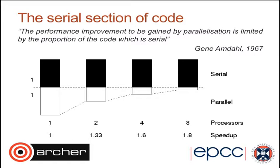We're now going to discuss Gene Amdahl's law. Amdahl came up with this in 1967 and found that the performance improvement gained by parallelization is limited by the proportion of the code which is serial. In this diagram, we can see that 50% of our code is serial (the black part) and 50% is potentially parallelizable (the white part).